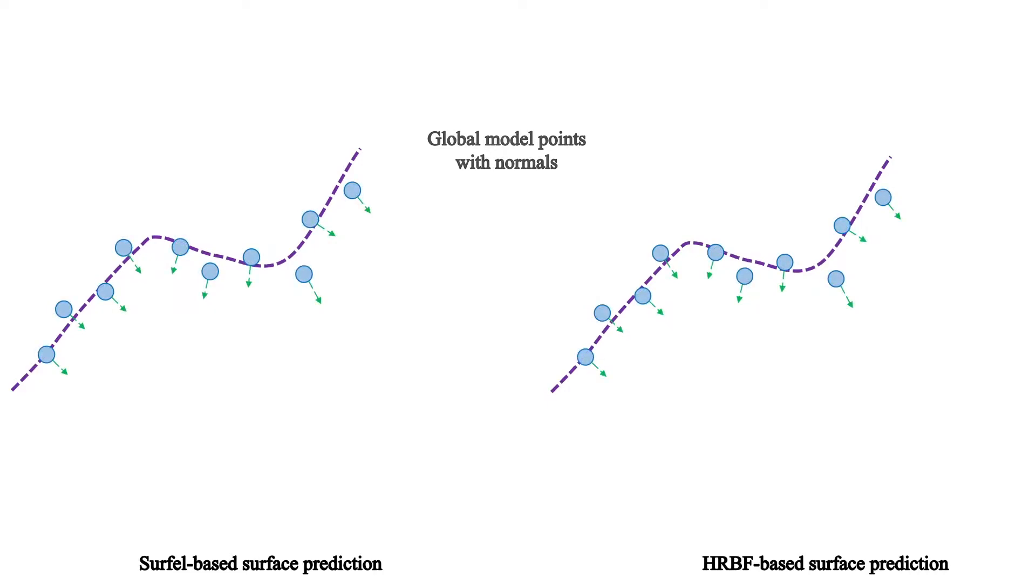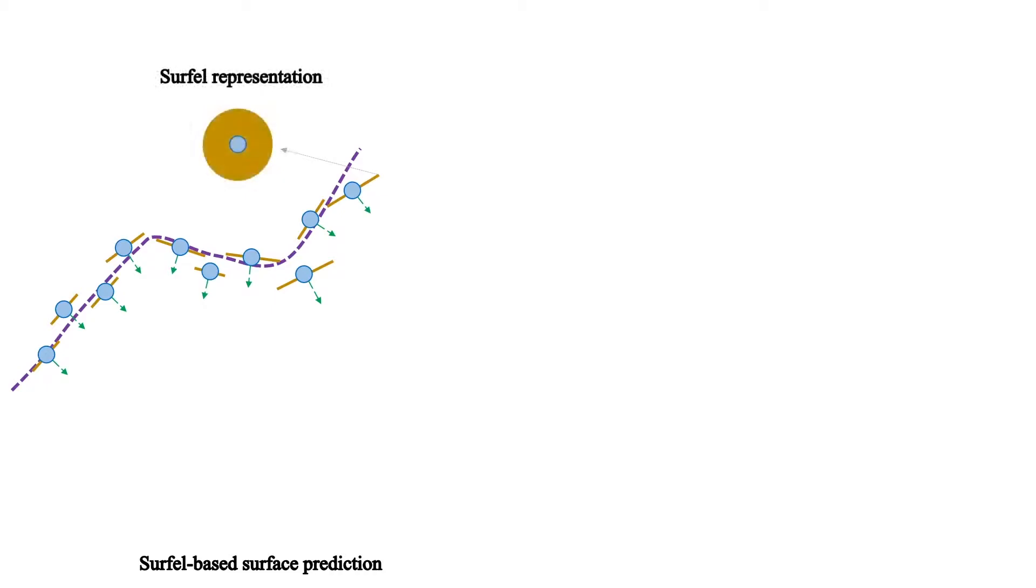The global model points are distributed around the underlying surface of the scanned object or scene in a surfel-based representation. Global model points are treated as surfels. Intuitively, a surfel is an oriented circular disk in 3D space.